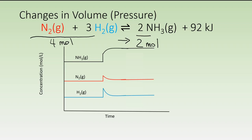The result on the graph is going to look like this. Perhaps slightly exaggerated, but you'll notice that immediately at the point of stress there is a jump in the concentrations due to the decrease in volume. Then, because there's a simultaneous increase in pressure, there is a shift to the product side, causing an increase in the amount of ammonia and a proportional decrease in the amount of nitrogen and hydrogen, which relieves the added pressure in the system by shifting to the side with the least moles of gas.